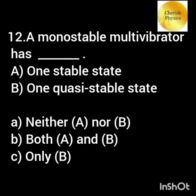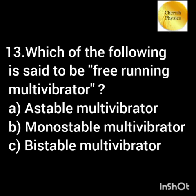A monostable multivibrator has (a) one stable state and (b) one quasi-stable state. Which of the following multivibrators is said to be a free-running multivibrator?